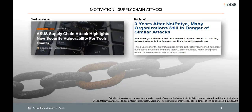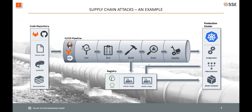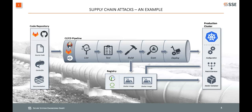There's a high demand to stop these supply chain attacks, so let's look deeper into them. Here we have an example supply chain starting with a code repository where we push new application code. This code runs through a CI/CD pipeline where we can lint, test, and build our application, push it to a registry, and finally deploy it to a production environment. This talk focuses on applications built upon Docker images and containers.